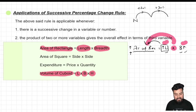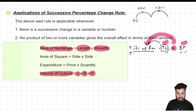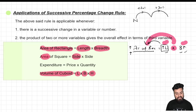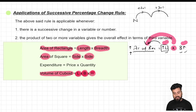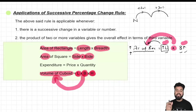Likewise, if you look at the other three formulas — area of square, expenditure, volume of cuboid — the same thing is happening in all three. If I increase the side length of a square, the area increases — so the effect is direct. So whenever formulas have 2 or more variables connected by a multiplication sign with a direct effect on the left-hand side variable, I can apply the concept of Successive Percentage Change.